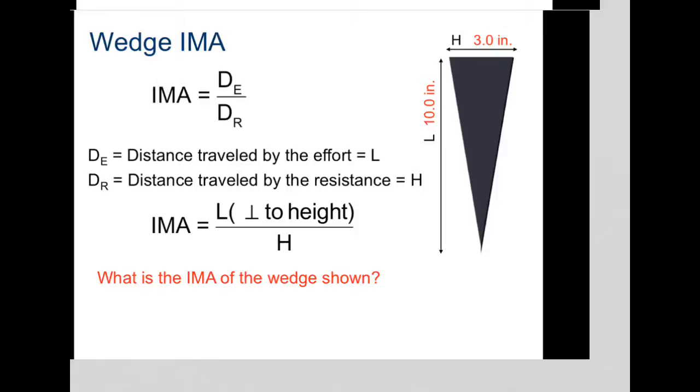This is a little bit different than the incline plane. Because with the incline plane we're using slope. Here we're not using slope. This is different. This is just distance travel, it's L, it's just the height of the wedge.